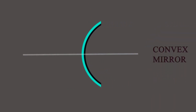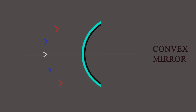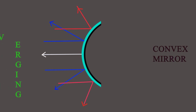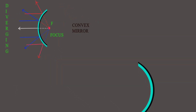This is the convex mirror and this wide straight line is the principal axis. Light falls on the convex mirror and is reflected. If you observe these reflected rays, they are not meeting at a point — all are diverging, moving away. So a convex mirror is known as a diverging mirror. If you observe closely, all the light rays appear to come from an imaginary point. This point is known as the focus and is denoted as capital F.